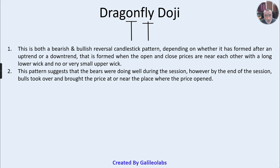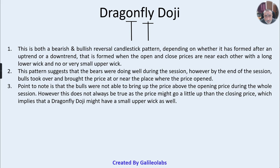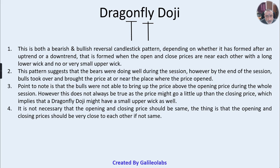This pattern suggests that bears were doing well during the session; however, by the end of the session, bulls took over and brought the price at or near the place where the price opened. Bulls were not able to bring the price above the opening price during the whole session. However, this does not always hold true, as the price might go a little above the closing price, which implies that a dragonfly doji might have a small upper wick as well.